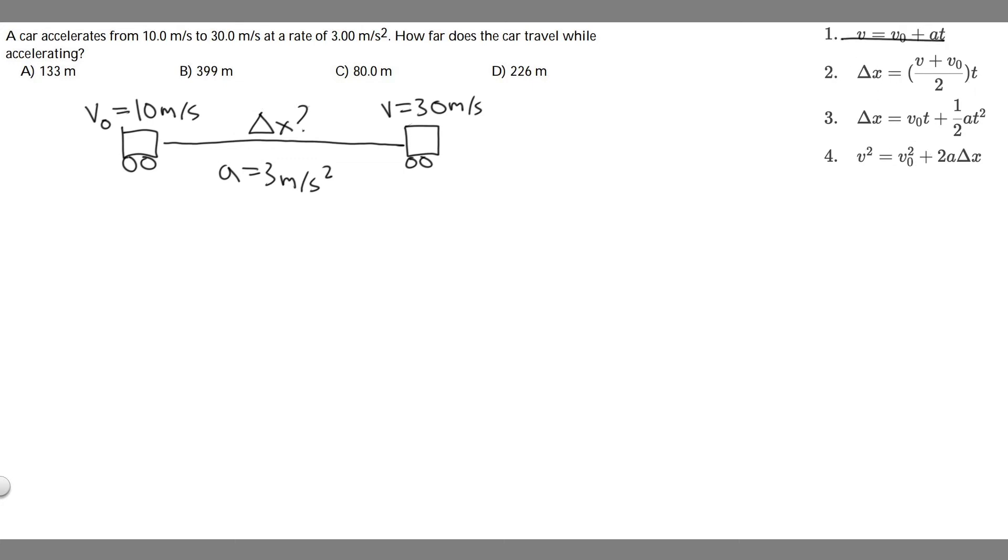The first equation doesn't have it, so we're not going to use that one. But if you look at the remaining three, we have v sub 0, the initial velocity. We have v final, and we have a. So if you look at the ones we should use, 2 and 3 all contain t, which is time, and we're not given that.